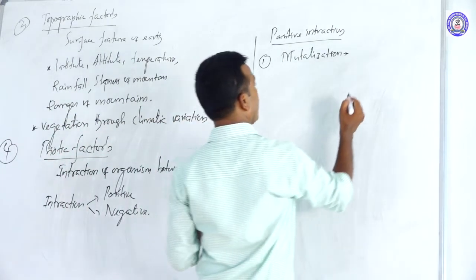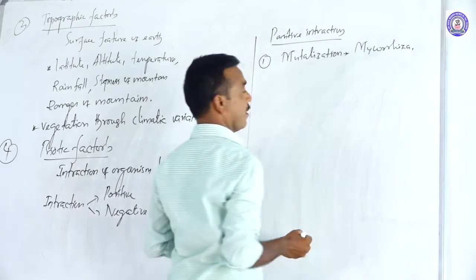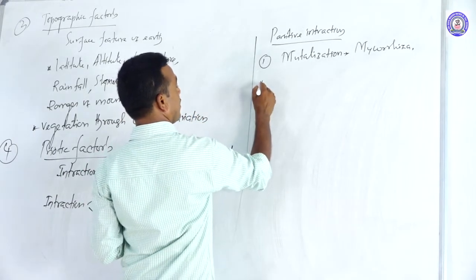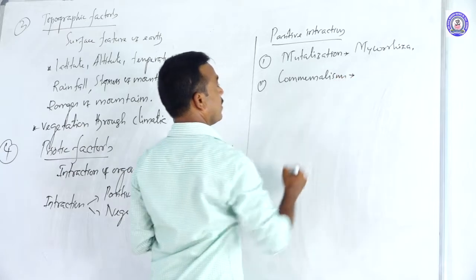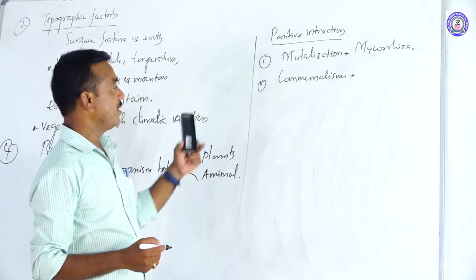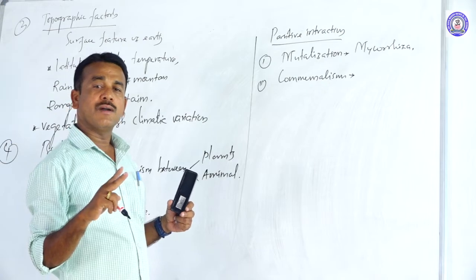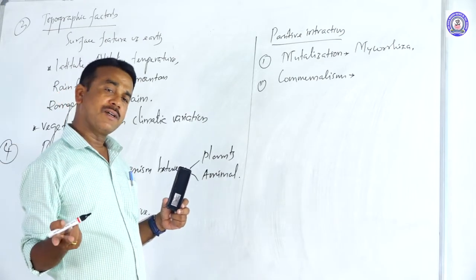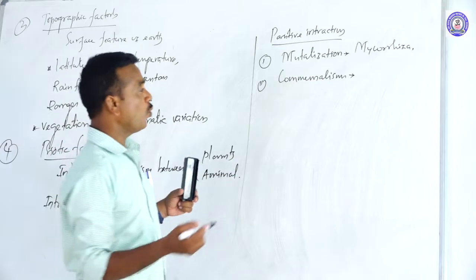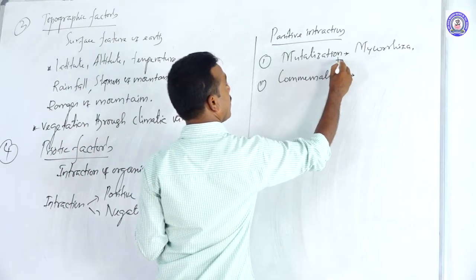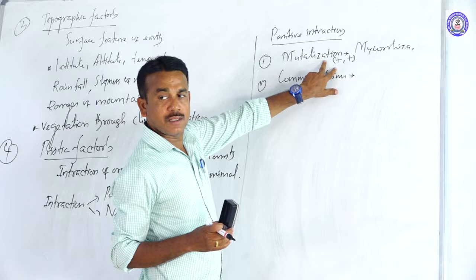Examples of mutualism include: mycorrhizal associations. The second type of positive interaction is commensalism — the interaction of two organisms or two partners where one partner attains benefit, and the other partner is neither benefited nor harmed. The symbol for mutualism is plus/plus, because both organisms are beneficial.